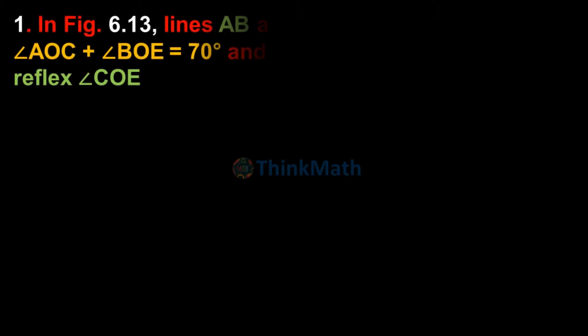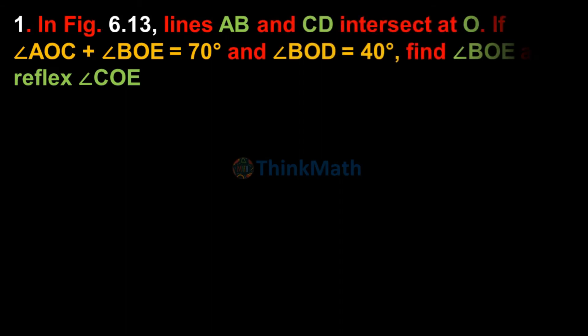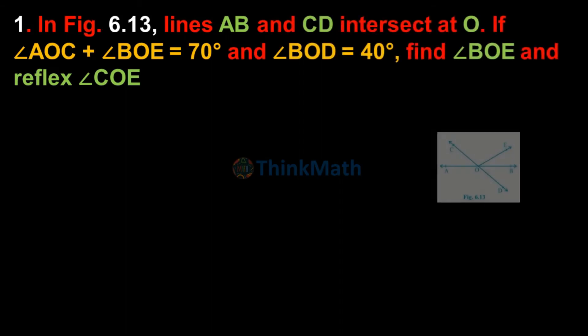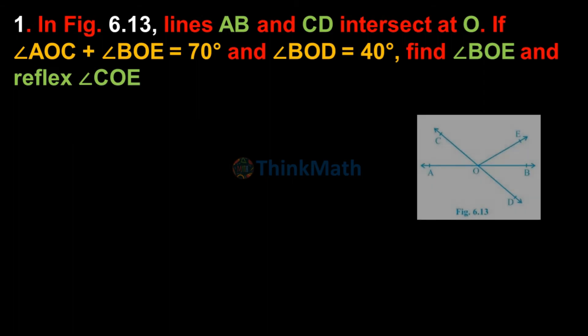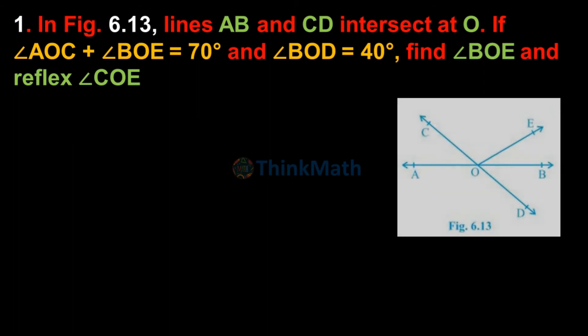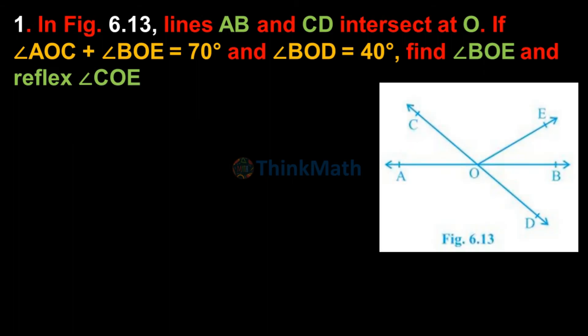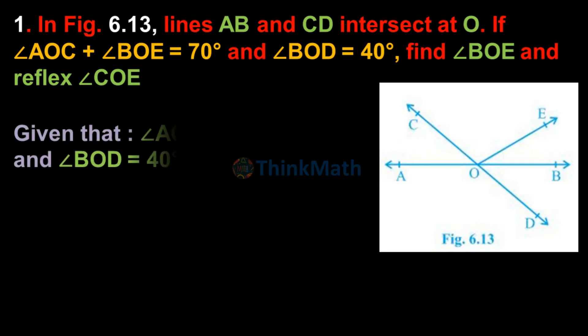Question 1: In figure 6.13, lines AB and CD intersect at O. If angle AOC plus angle BOE equal to 70°, and angle BOD equal to 40°, find angle BOE and reflex angle COE.